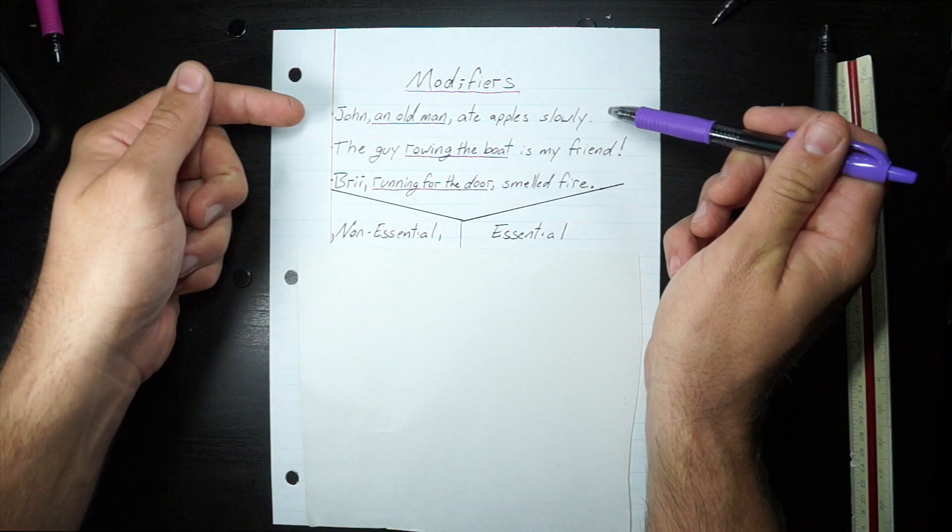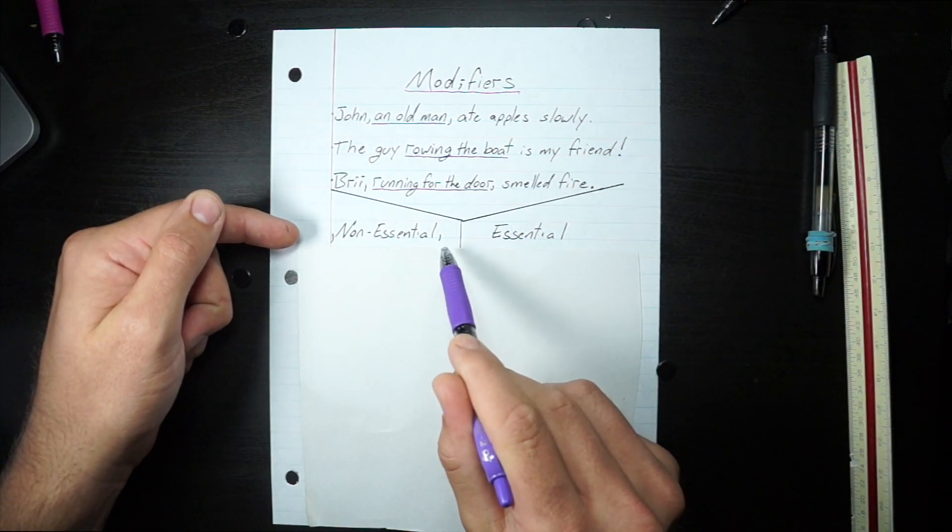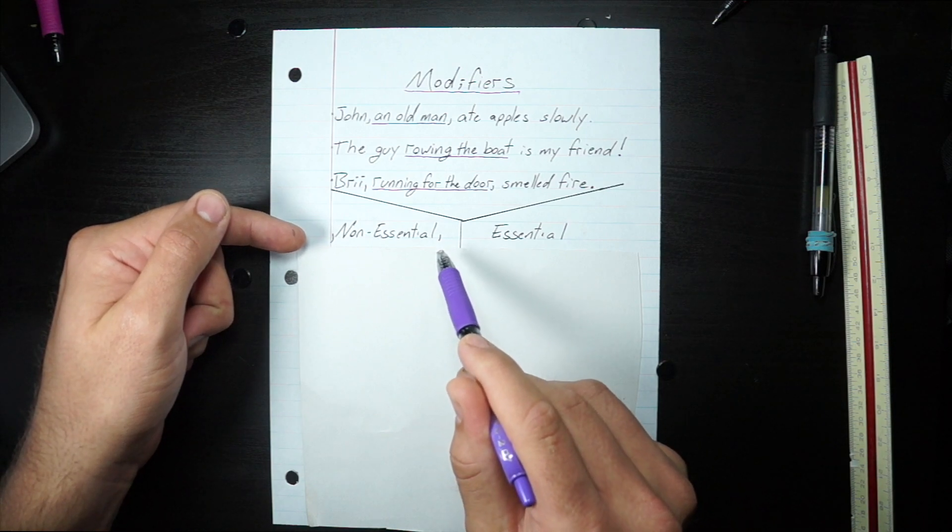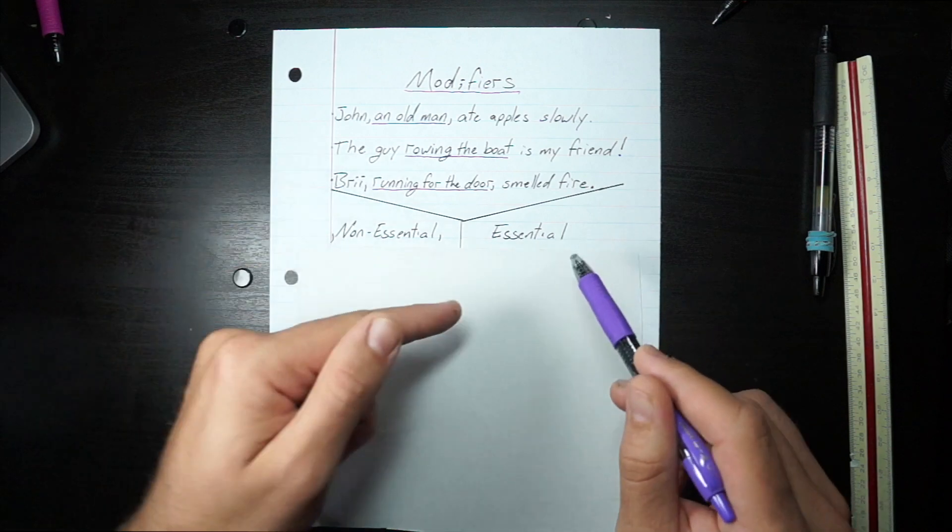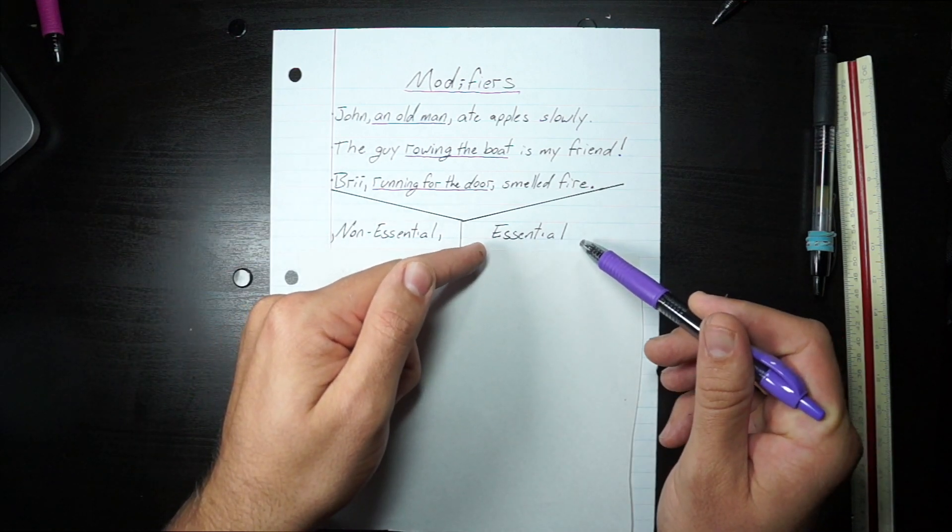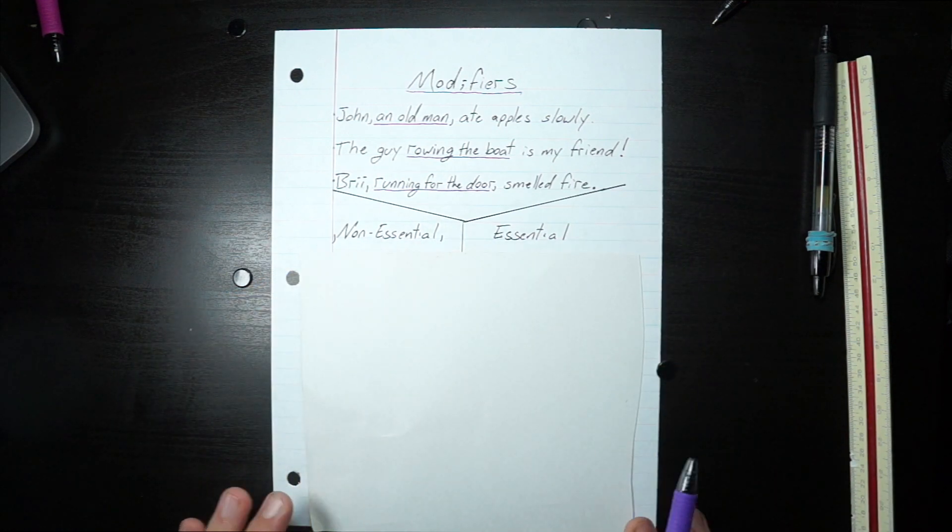So if you notice some of these have commas around them, some of these don't have commas around them. If they have commas around them, that means it's a non-essential modifier. Basically you can take it out of the sentence and the sentence still works. If it doesn't have commas around it, that indicates that it's an essential modifier, which means it needs to be in the sentence to make sense.